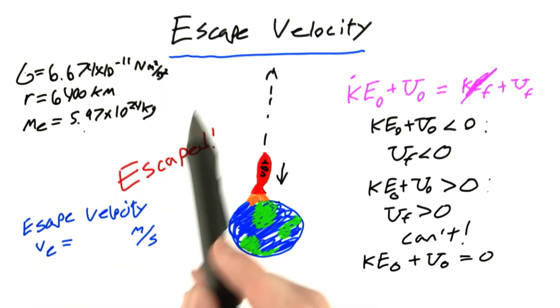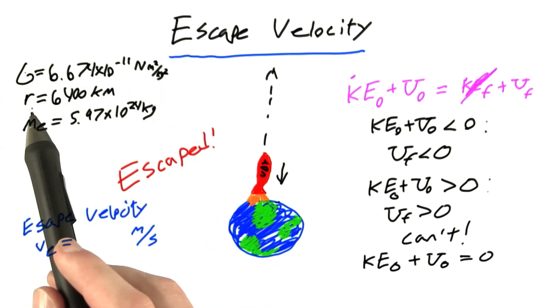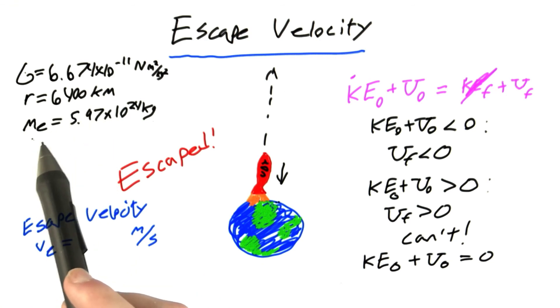In order to solve this problem, you're going to need these constants. The value of big G, the value of the radius of the Earth, and the mass of the Earth. Good luck finding the escape velocity. And if you're confused about any of the topics I just discussed, please head to the forums and ask your questions there. I'll be happy to answer them.